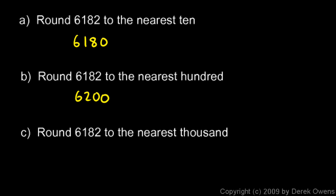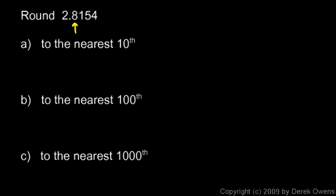Round 6182 to the nearest thousand. The thousands place is the 6, so we look at the next digit — it's not 5 or above, so we don't round the 6 up. The nearest thousand is 6000, and you can see this number is closer to 6000 than to 7000. Here's another example: round 2.8154 to the nearest tenth. The tenth is the first digit after the decimal. We look at the next place and see that we don't round the 8 up, so the answer is 2.8.